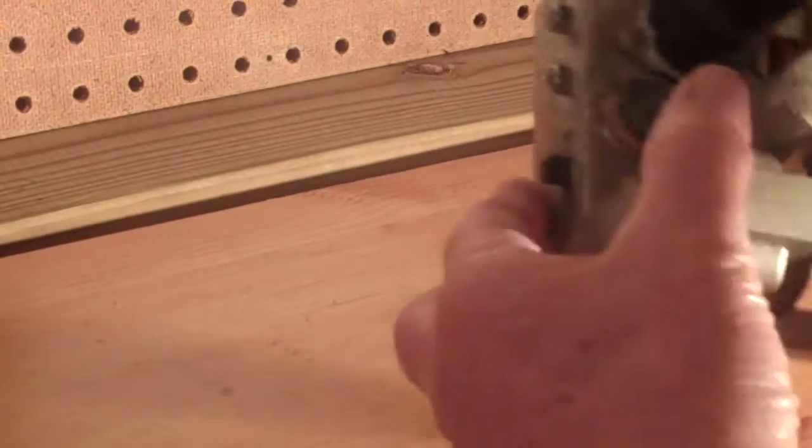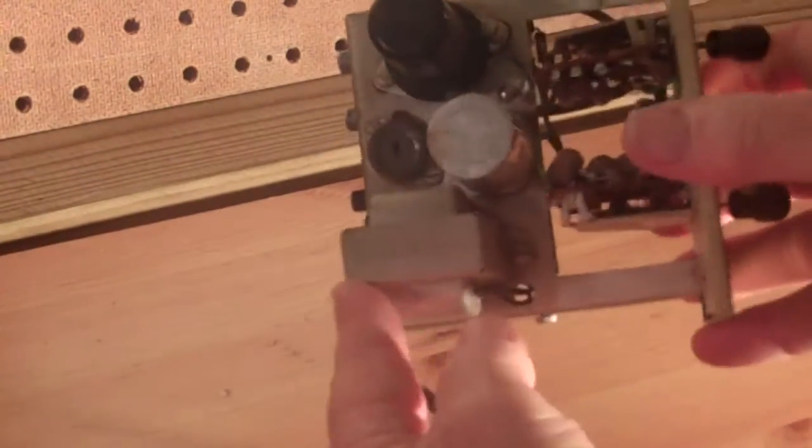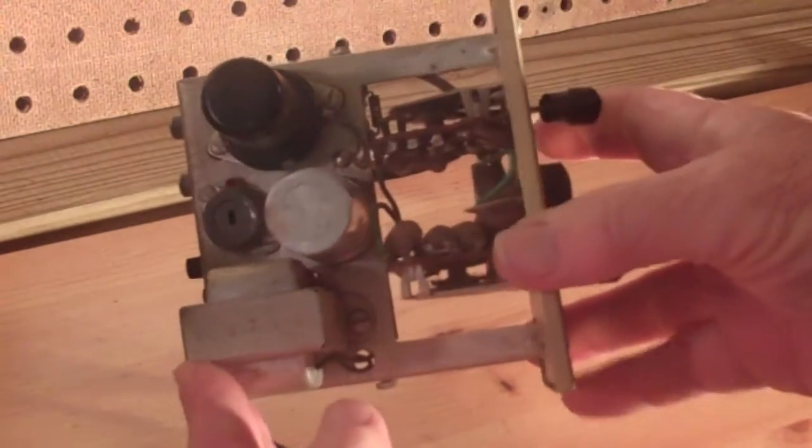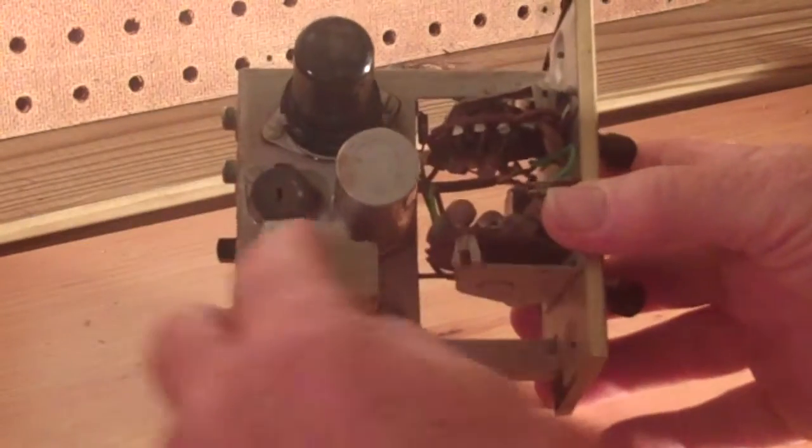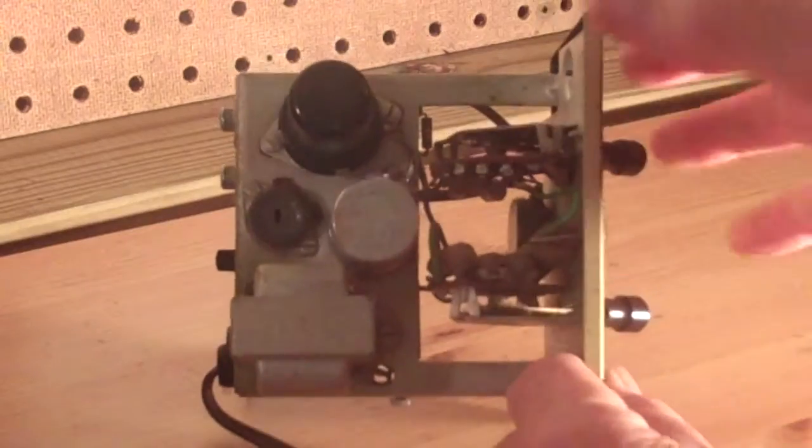And there's a picture of the chassis, the tube, the capacitor, transformer, hum control, and the equalizer assembly here.